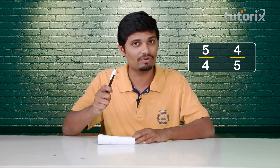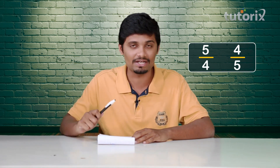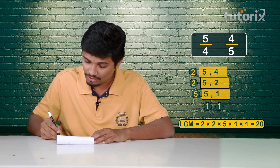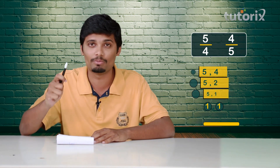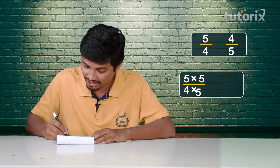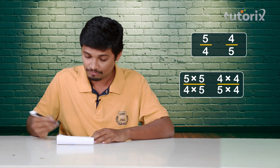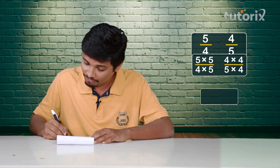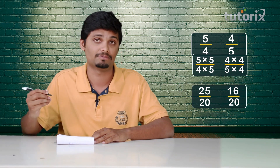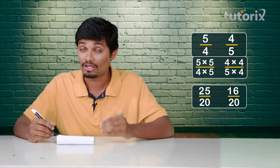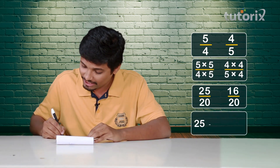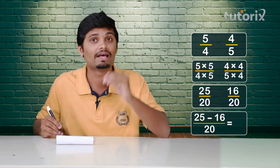Now, before you go, solve another problem for good practice. Try and subtract 4 by 5 from 5 by 4. As they are unlike fractions, I convert them to like fractions. To convert them, I take the LCM of both the denominators. LCM of 5 and 4 is 20. Now I multiply the numerator and denominator of 5 by 4 by 5, and of 4 by 5 by 4. The fractions after multiplication become 25 by 20 and 16 by 20. Then carrying out the subtraction, the final result is 25 minus 16 by 20, which is 9 by 20.